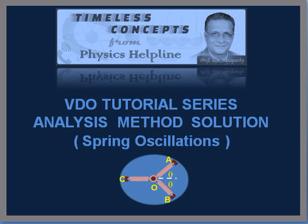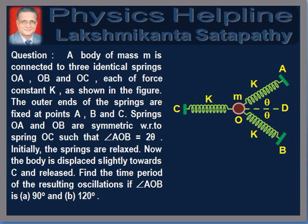In this video tutorial, we will discuss a problem on the oscillations of a body connected to a network of three springs. The question is as follows. A body of mass M is connected to three identical springs OA, OB, and OC, each of force constant K as shown in the figure.